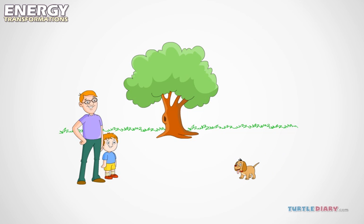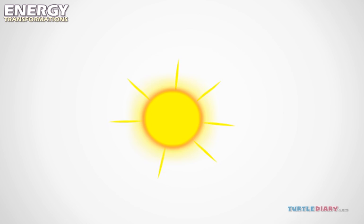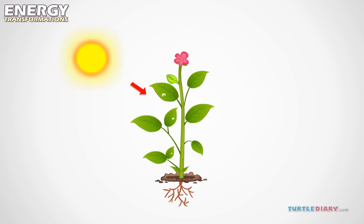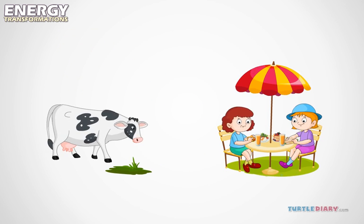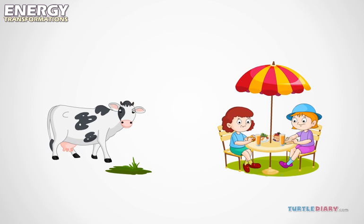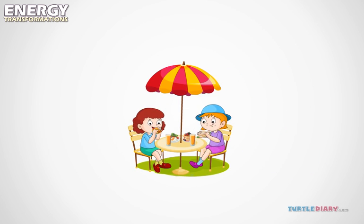People, animals, and plants all need energy to live. Where do we get it? It starts with the sun. The sun is the source of a lot of the energy on Earth. Plants use sunlight to make their food. Then people and animals eat the plants and get energy from them. People also eat animals which eat the plants.